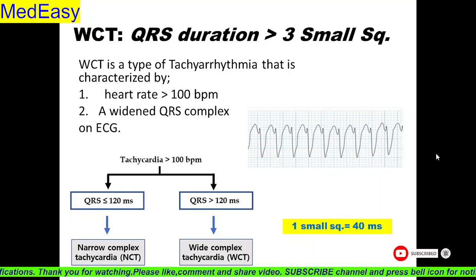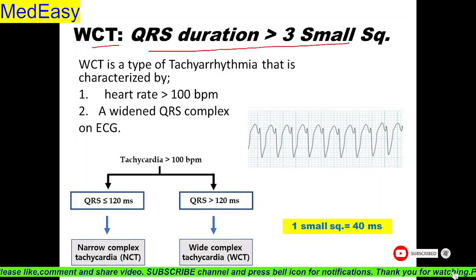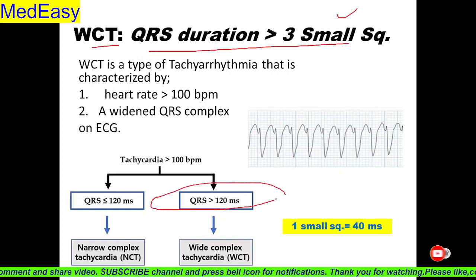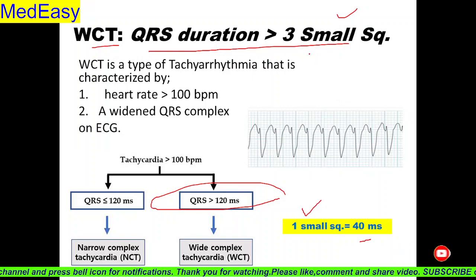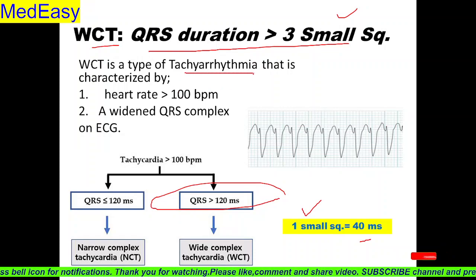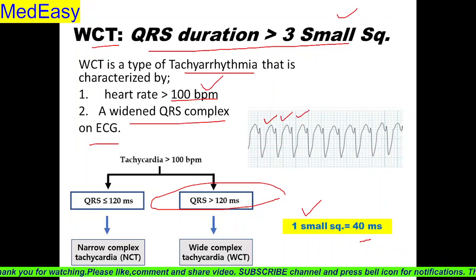Welcome back in the cardiac arrhythmia basic series. Aaj isme hum discuss karenge wide complex tachycardia. Wide complex tachycardia hum kisko bolte hain? When QRS duration is more than 3 small squares or more than 120 milliseconds. One small square is equal to 40 milliseconds. In wide complex tachycardia, QRS duration is more than 3 small squares or 120 milliseconds. Wide complex tachycardia is a tachycardia characterized by heart rate more than 100 beats per minute and a wider QRS complex on ECG. Here we can see in ECG, QRS is widened.